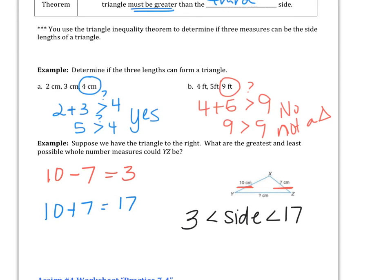So in order to figure those out, we took those numbers and we subtracted them to get that number that it had to be bigger than, and we added them up to get that number that it had to be less than.